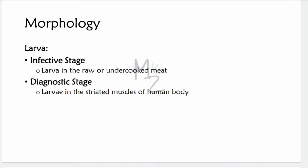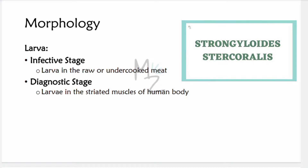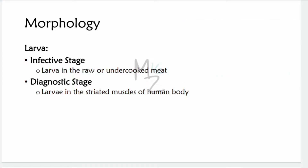Unlike some other nematodes where the infective stage is a specific larval form or egg, for Trichinella spiralis the infective stage is larvae present in raw or undercooked meat. When present in the striated muscles of the human body, this is the actual location — the diagnostic stage.